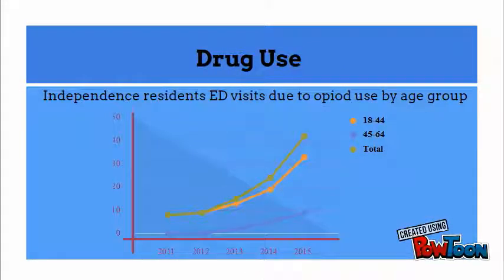Drug use was the top overall concern among residents and in the top five for childhood public health concerns. This graph shows the number of emergency room visits related to opioid use in Independence. As you can see, the trend of opioid-related hospital visits has rapidly increased in Independence, which follows national trends.